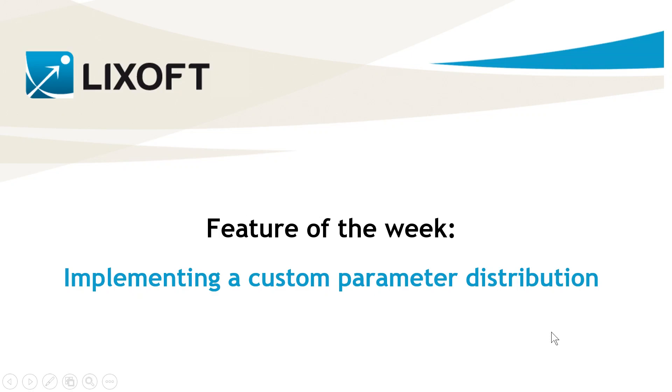When setting up a project in Monolix, the distribution of the individual parameters can be selected from a list which contains normal, lognormal, logit and probit distributions. These four distributions have been described in the feature of the week video number 31 and they capture most of the situations.